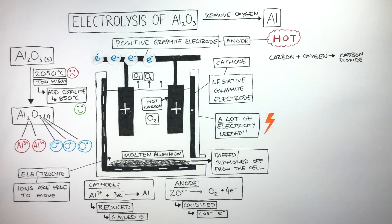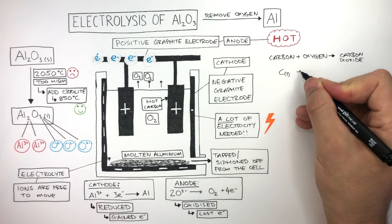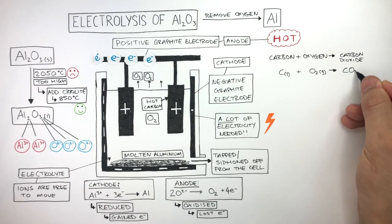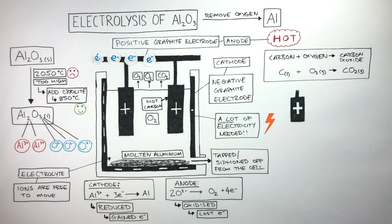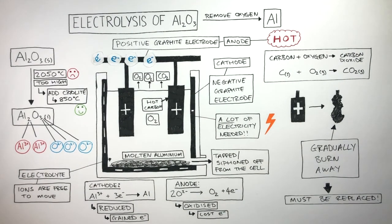We can write this as a balanced equation where C, S for solid, reacts with O2, G for gas, forming CO2, G for gas. Over time, the positive anode decreases in mass as it gradually burns away. So it must be replaced regularly.